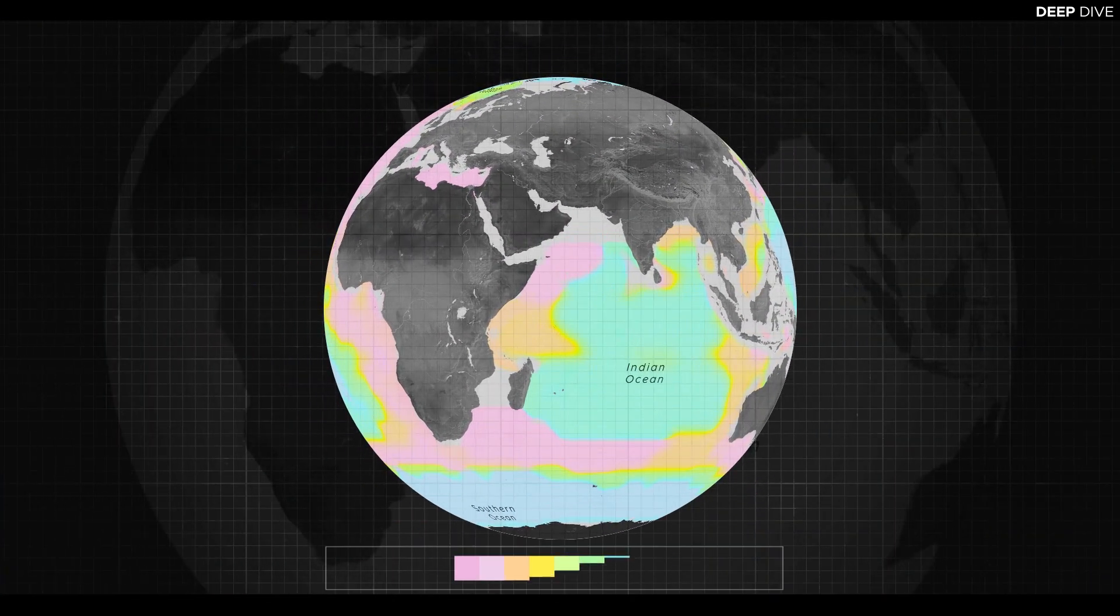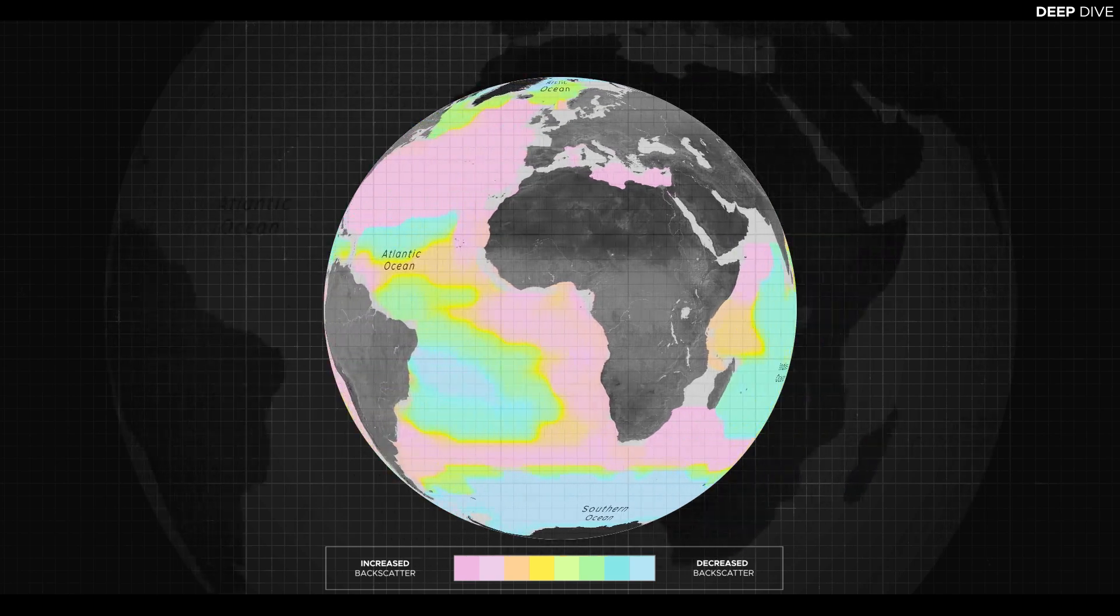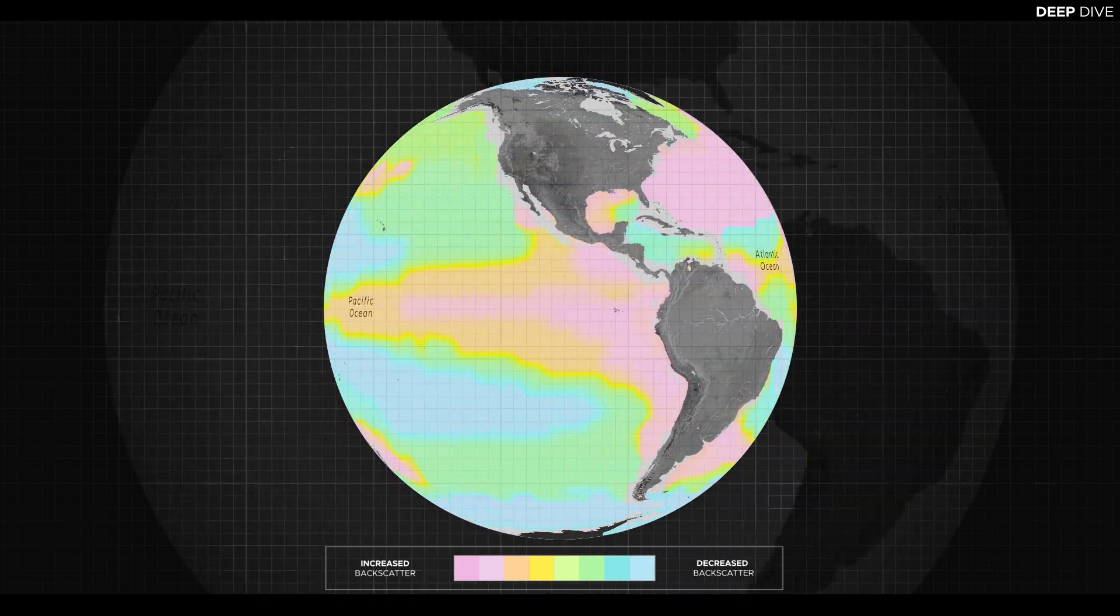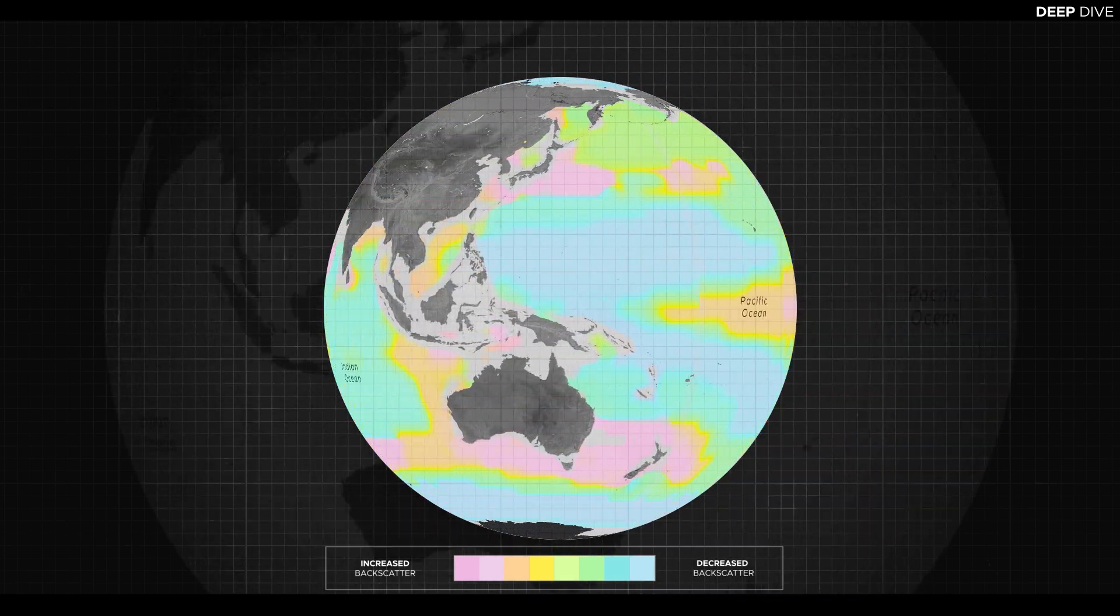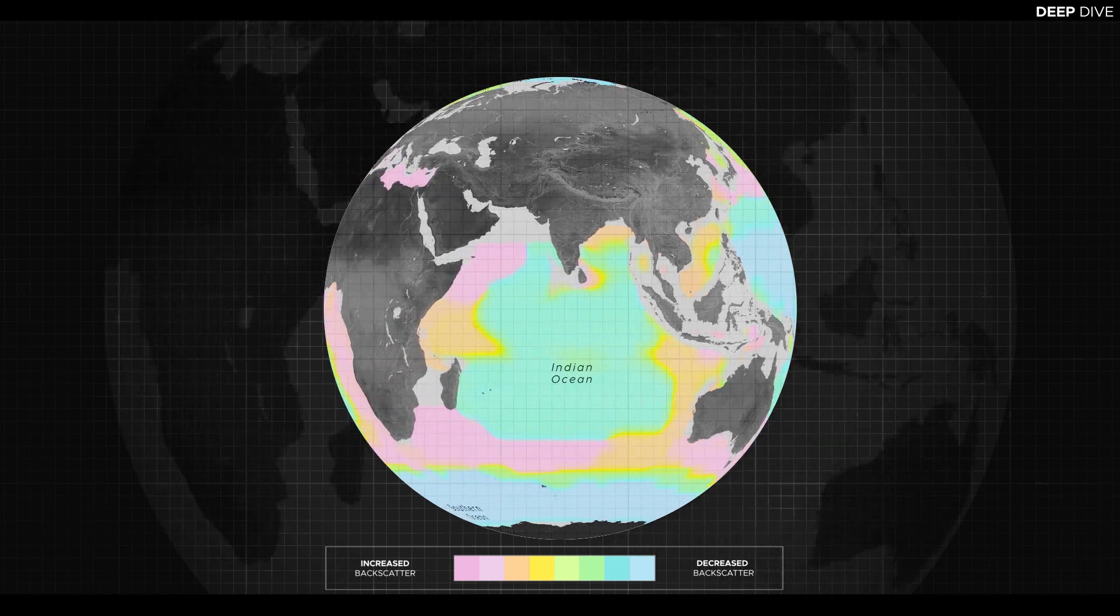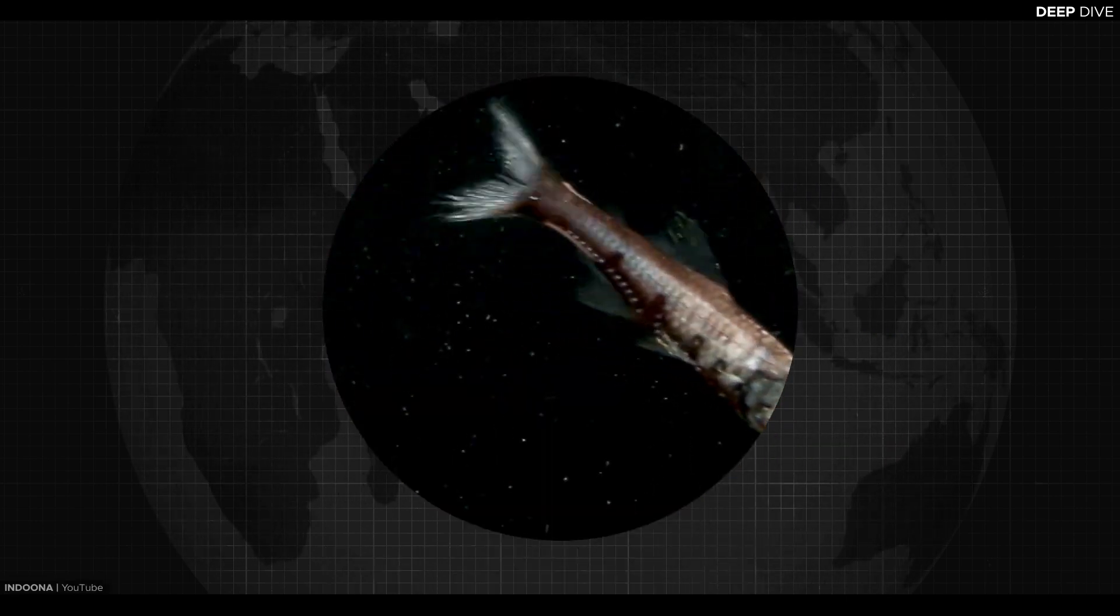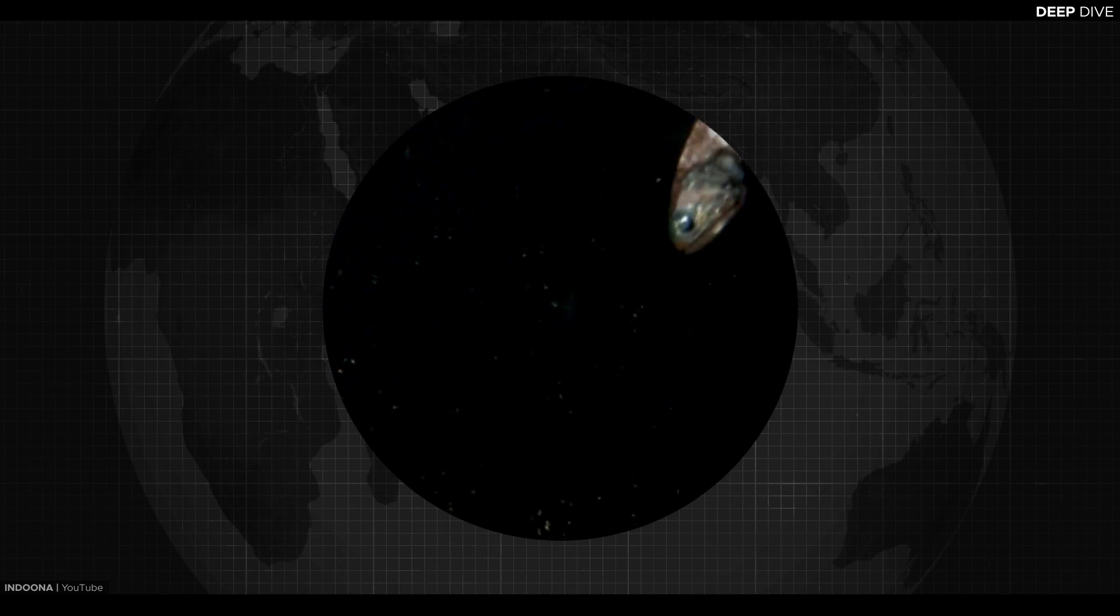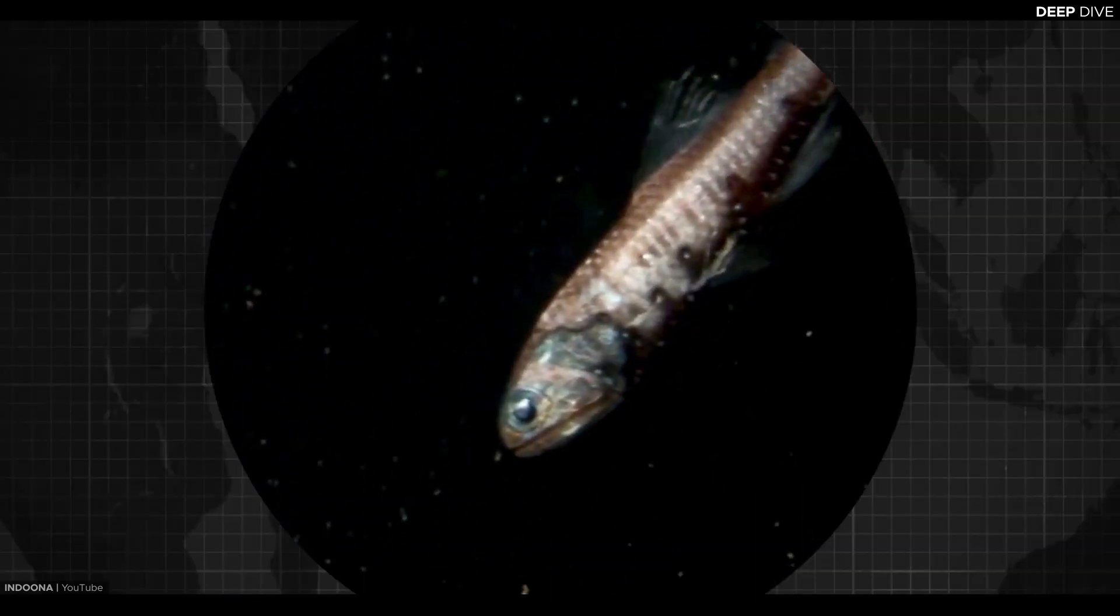Today we know that the deep scattering layer is, although it varies in structure and severity depending on the region, indeed a global phenomenon that stretches through every ocean and encompasses the entire planet. The main culprit responsible for this mind-blowing phenomenon is, as you probably guessed by now, the lanternfish.